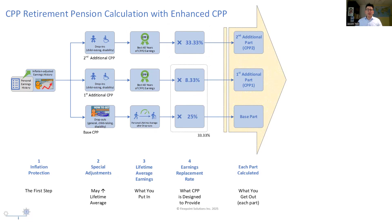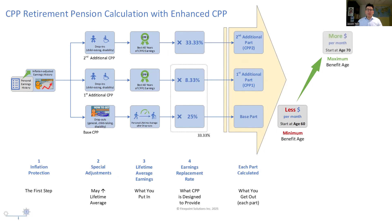Just like before, the final adjustment is made to the total based on the age you start taking CPP. The CPP provides a maximum benefit for those who start at age 70, but you can choose to take it earlier with reduced payments.